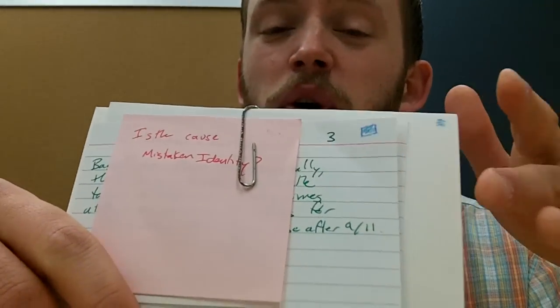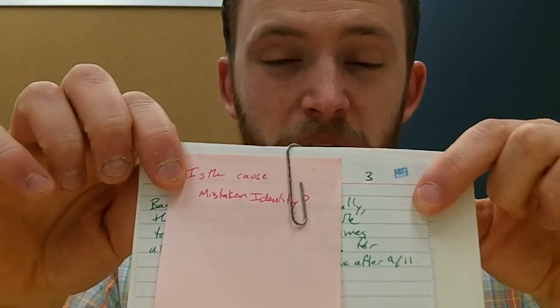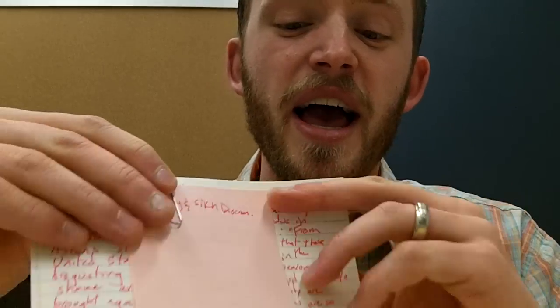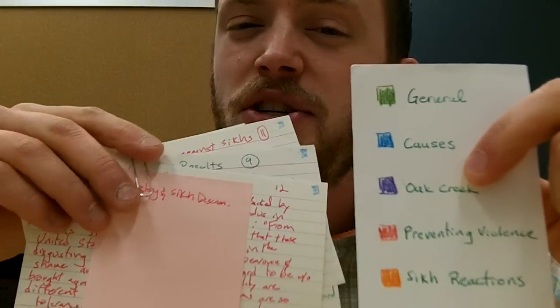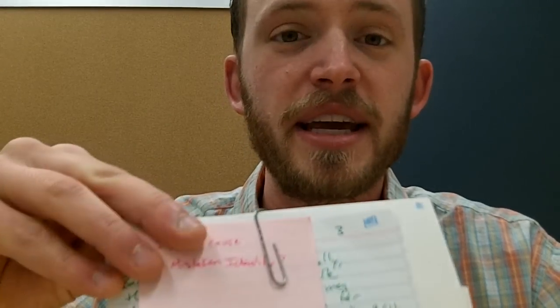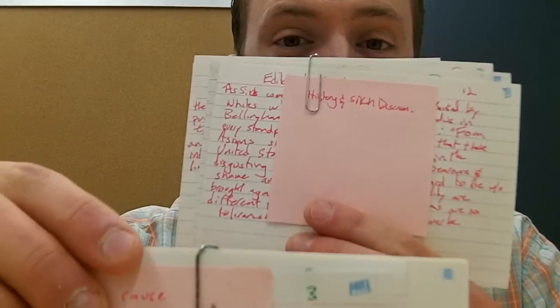Now I have here, in order, what I'm going to write about when it comes to the mistaken identity of Sikh Americans. I did the same thing for the next paragraph. I have some blues together because I split up my causes category into two different paragraphs. I felt like some of them went more with the history of Sikh discrimination and some more with this category I'm calling mistaken identity. So I'm going to talk first about this group and then this group.